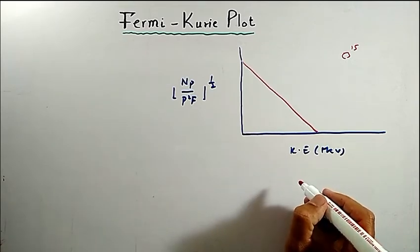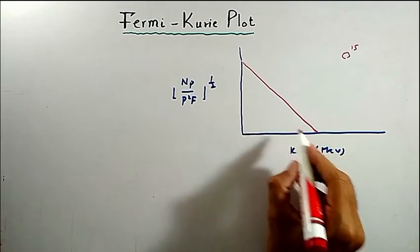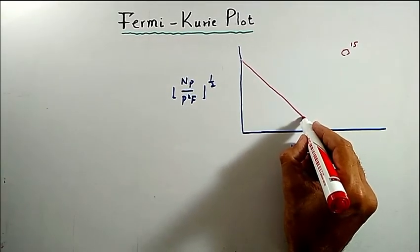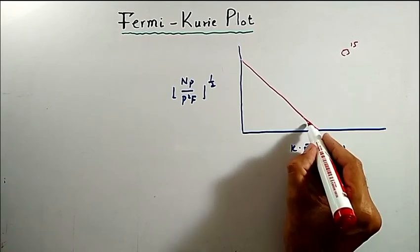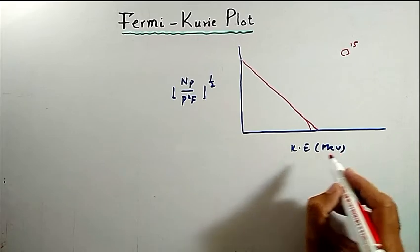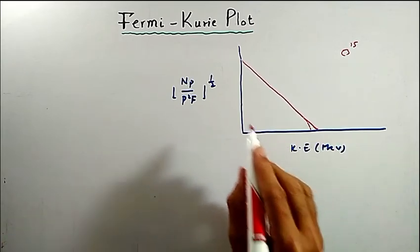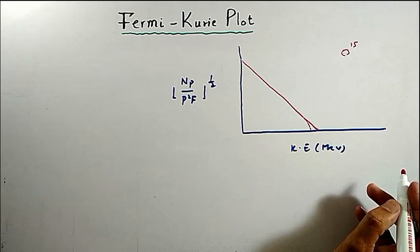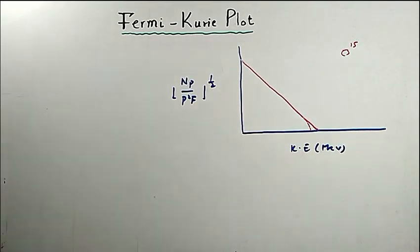For forbidden decays, the Kurie-Fermi plot — sometimes also called the Fermi-Kurie plot — will be a distorted curve. The departure from linearity in the tail of the Kurie-Fermi plot is a guide to the existence of a non-zero mass of the neutrino. To summarize: if the Fermi-Kurie plot for any disintegration is a straight line, then that transition or decay is an allowed transition in accordance with Fermi theory.